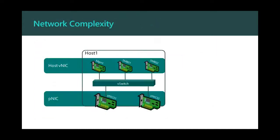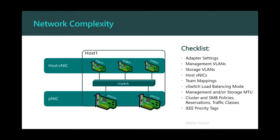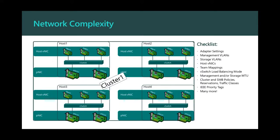What we've done is brought a new thing called Network ATC, which is trying to tackle all these things on the checklist. The reason deployment is so long, complex, and error prone is because we have all of these things we have to take care of just for host networking. That's just host one — once you get host one done, you actually have to make sure the other nodes in the cluster look exactly the same. Otherwise the reliability and performance of your solution may degrade.